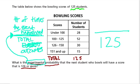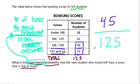We're looking at 126 or more, so be careful — that includes two groups. Don't ignore this 15 right here. So in fact there are 30 and 15, which is 45 students who scored 126 or more. So our experimental probability is 45 — that's the number of times the event happened — over 125, the total outcomes or total students in the survey.